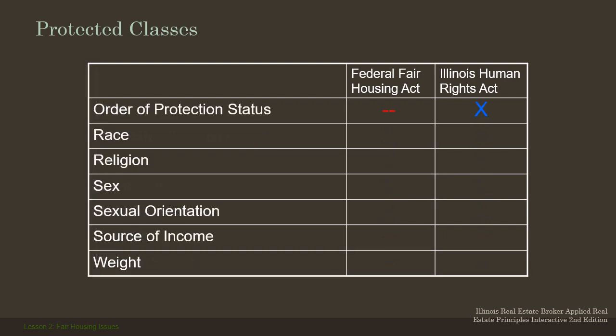Order of protection status is not under the federal act but is under the Illinois Human Rights Act. It protects the individual leasing property — let's say a woman takes out an order of protection against her former boyfriend who's harassing her. If I'm a landlord and I know that a woman has an order of protection against someone, I couldn't say, 'That puts my other tenants in danger because that person might come back.' So the order of protection status protects the person who filed it, not the person it was filed against.